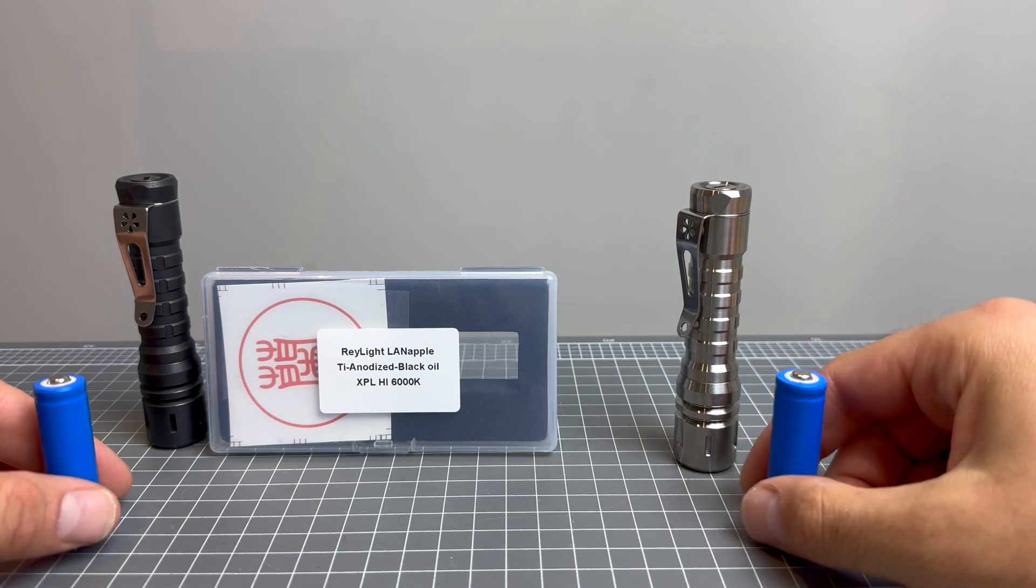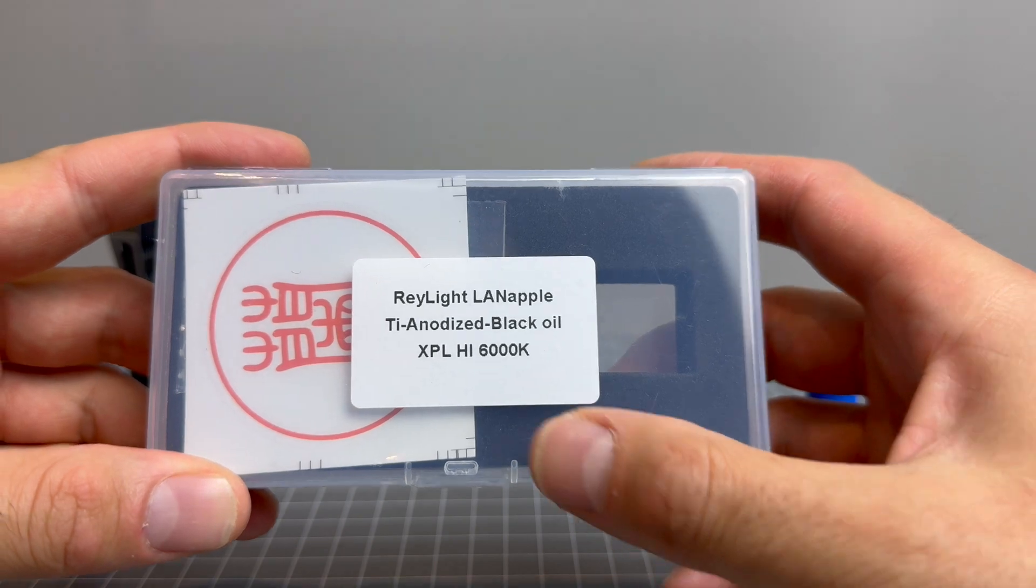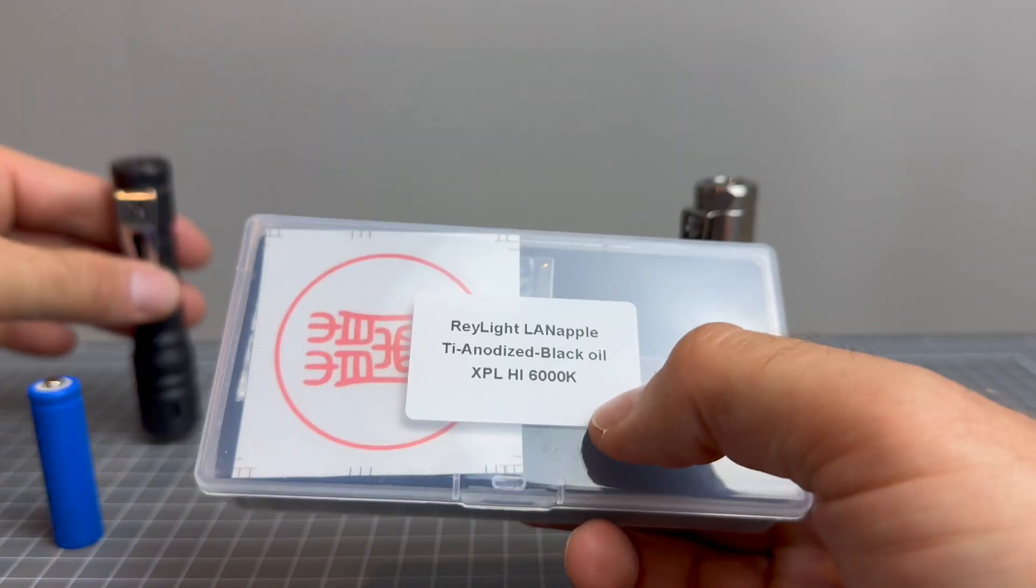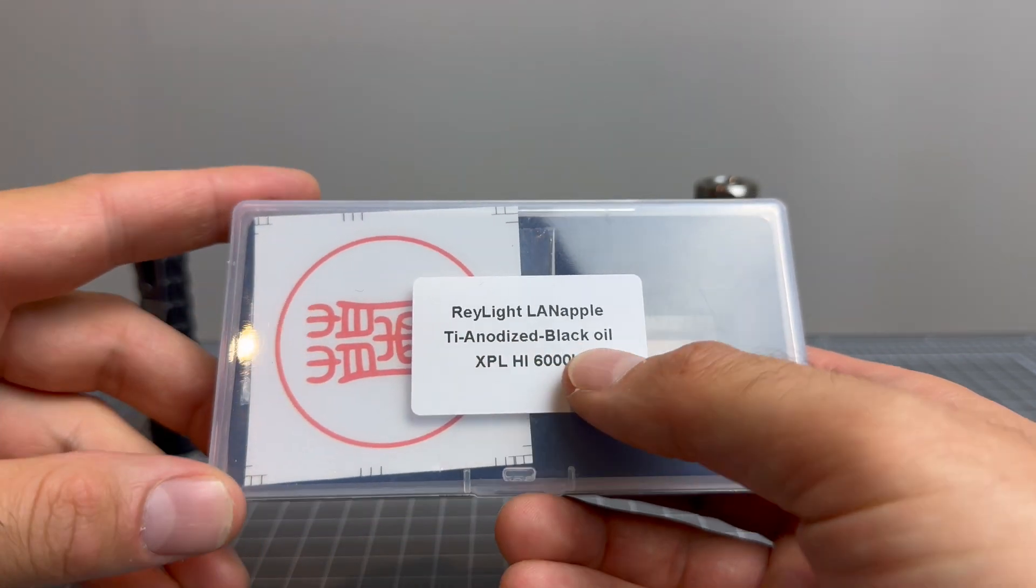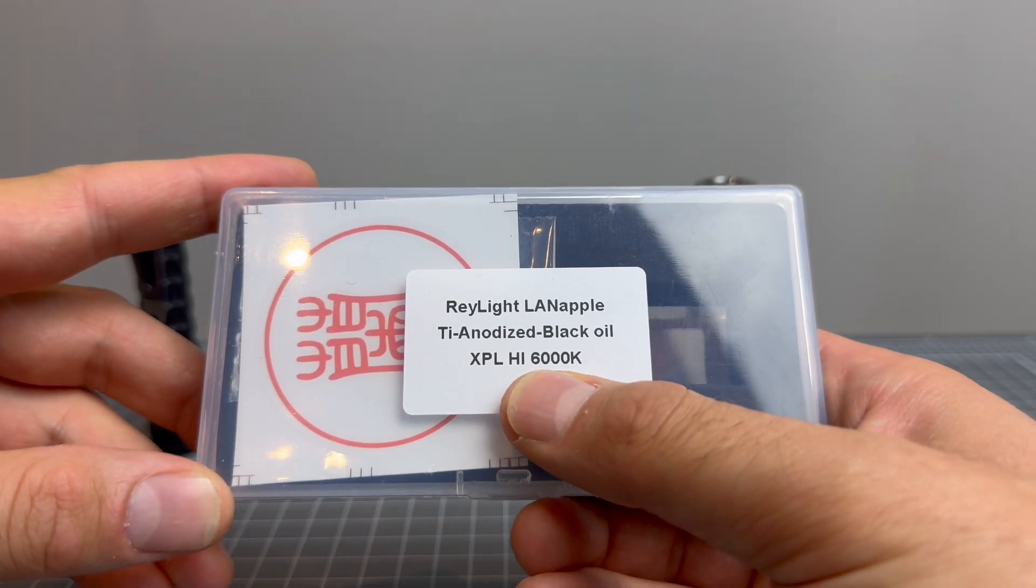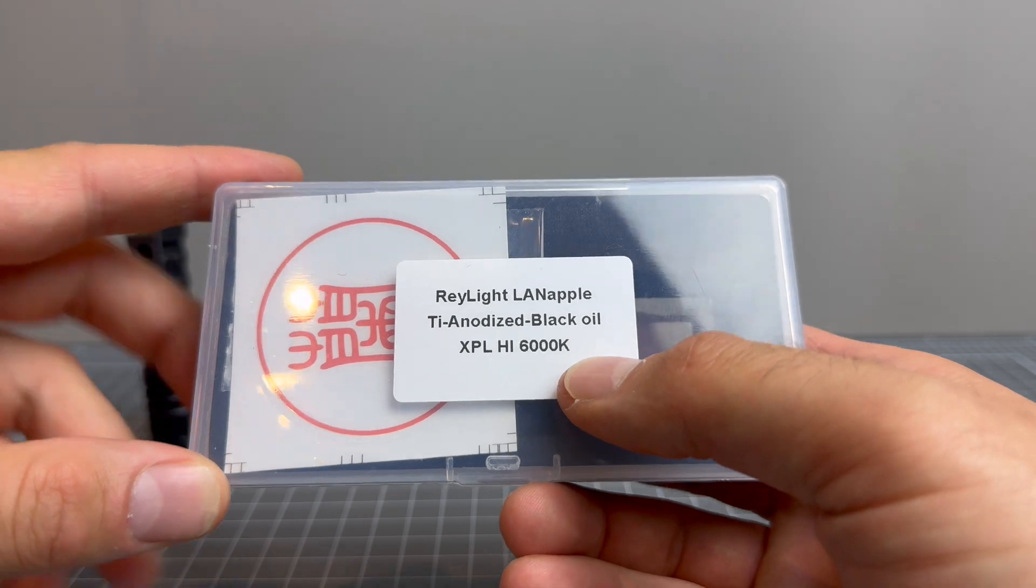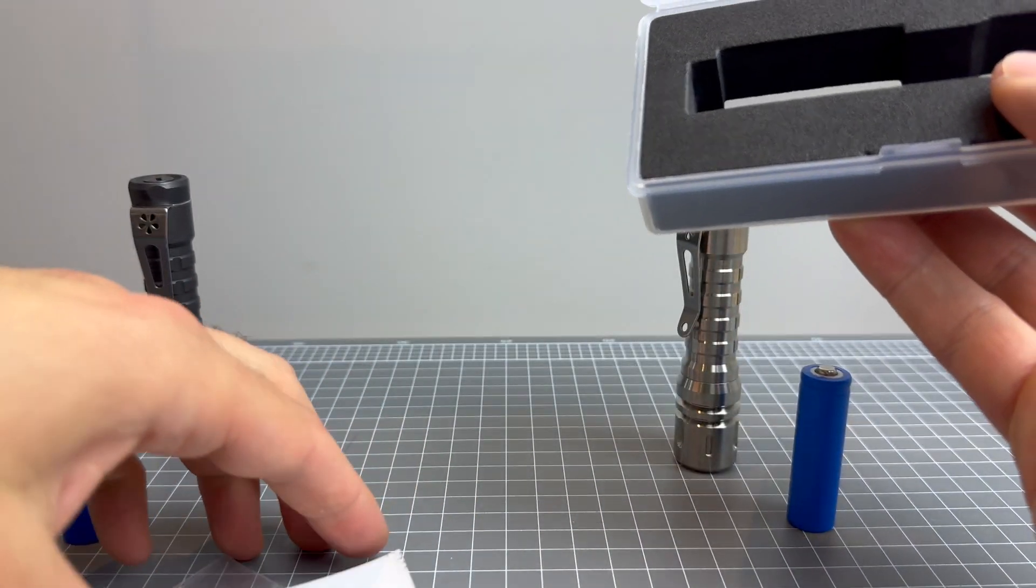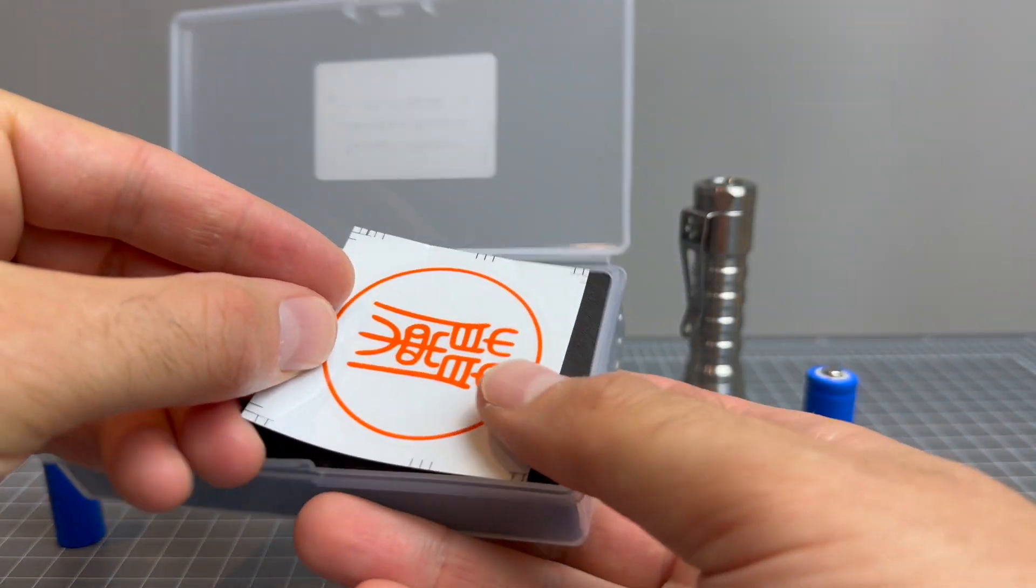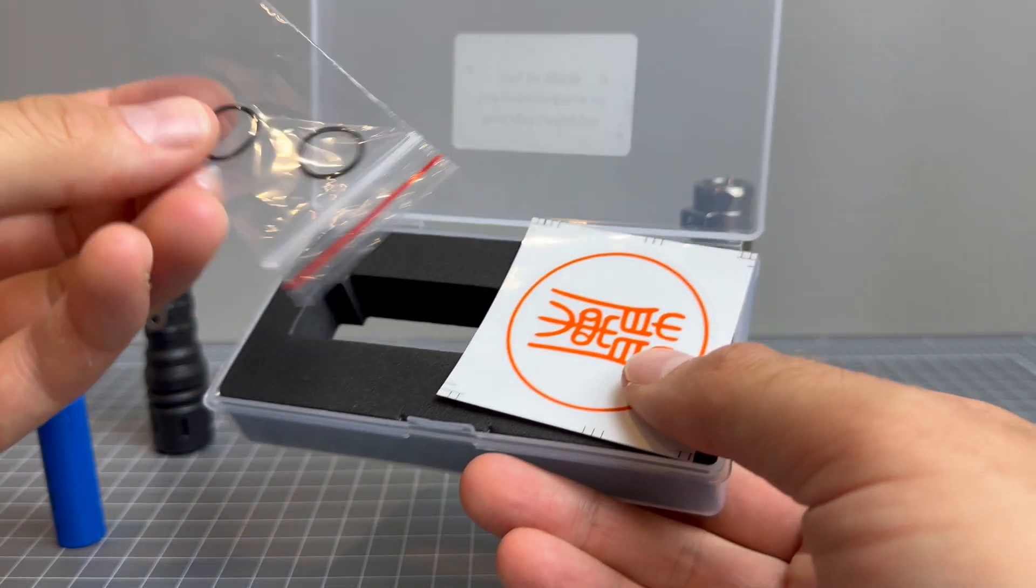Alrighty, so this is how they'll come. You'll get a box and it'll tell you Raylight Lanapple. This is the box for the black oil, as you can see. So it's TI anodized with black oil, XPL high, 6,000K. Now, inside the box, you will get a sticker and two spare O-rings.